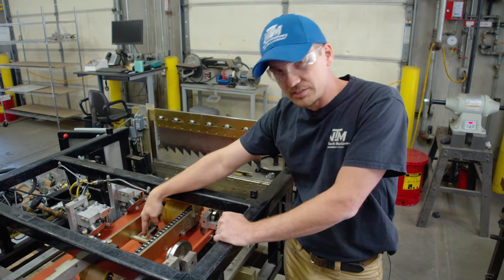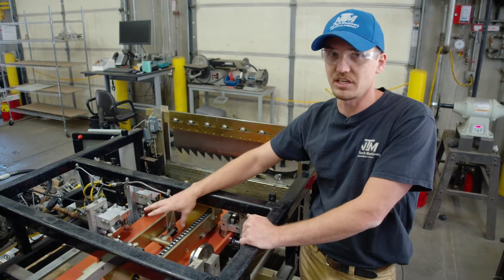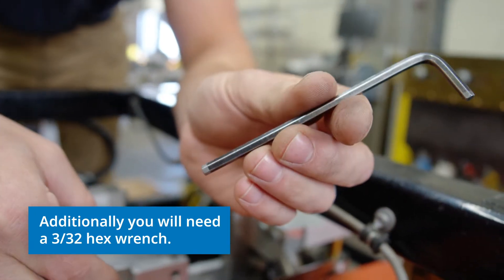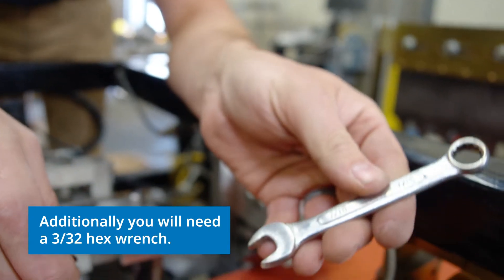However, the process of setting the tension on your encoder remains the same. You'll need a 5/32 hex wrench and a 7/16 box-end wrench.